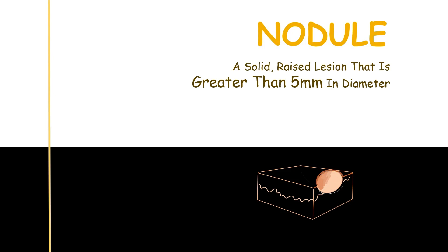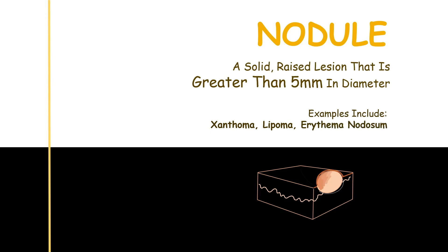A nodule is a solid raised lesion that is greater than 5 millimeters in diameter. Same as for a papule, a nodule may be hypo- or hyperpigmented as compared to the surrounding tissue. Examples include xanthoma, lipoma, or erythema nodosum.